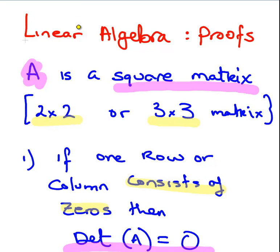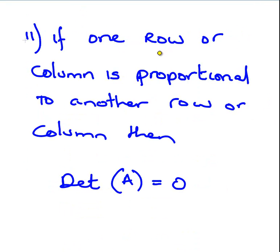The second proof is: if one row or column is proportional to another row or column — to be clear, if one row is proportional to another row, or one column is proportional to another column, not a row proportional to a column — then also the determinant of A is zero.